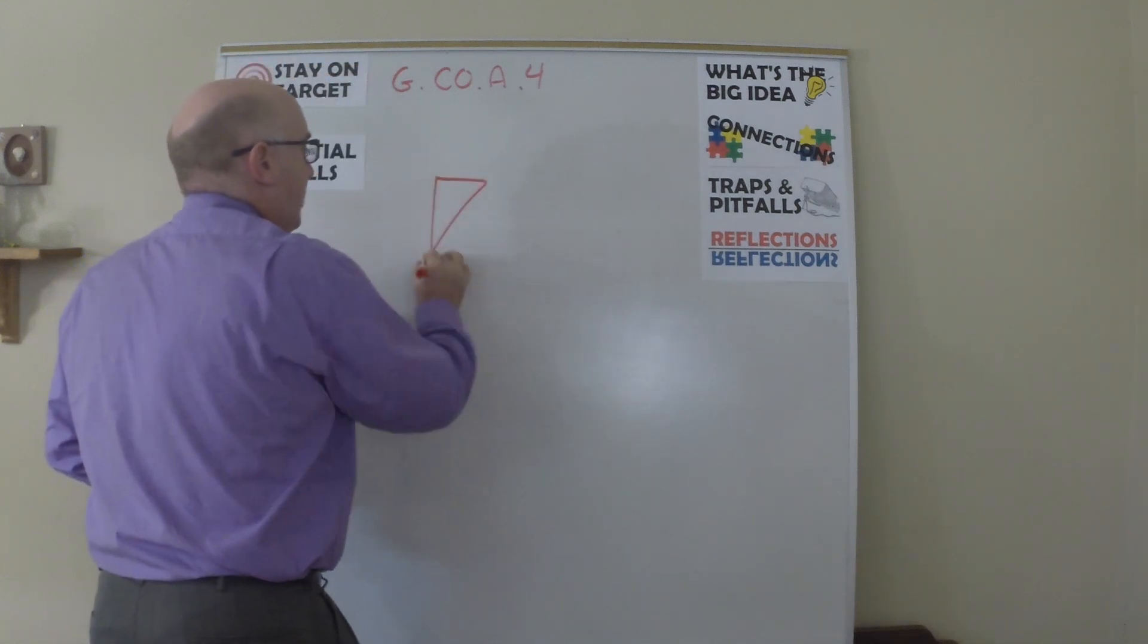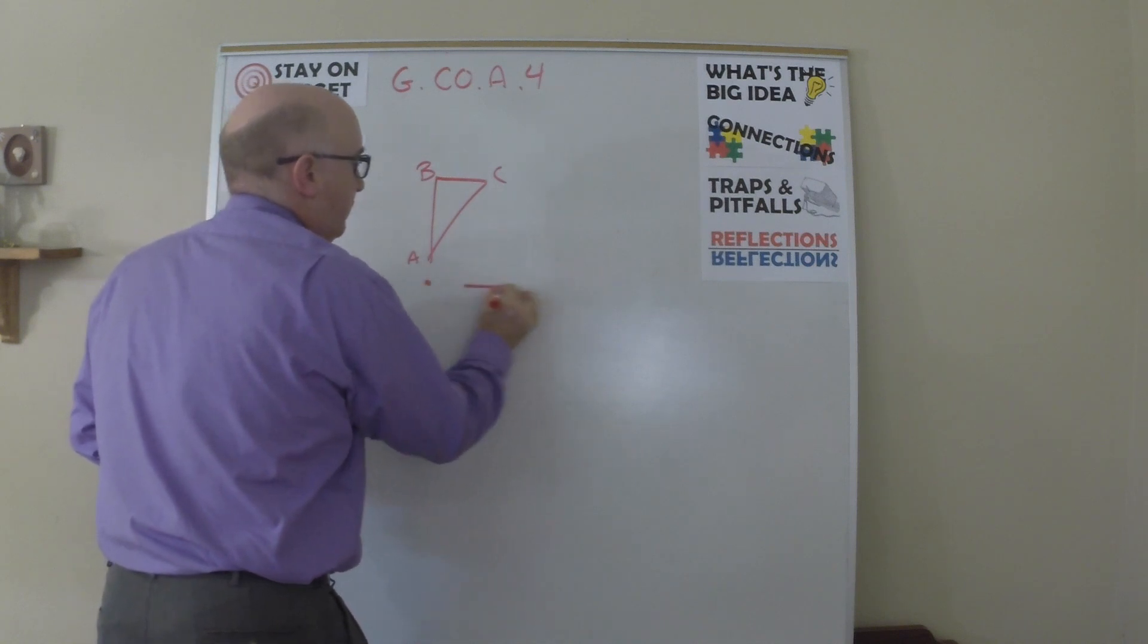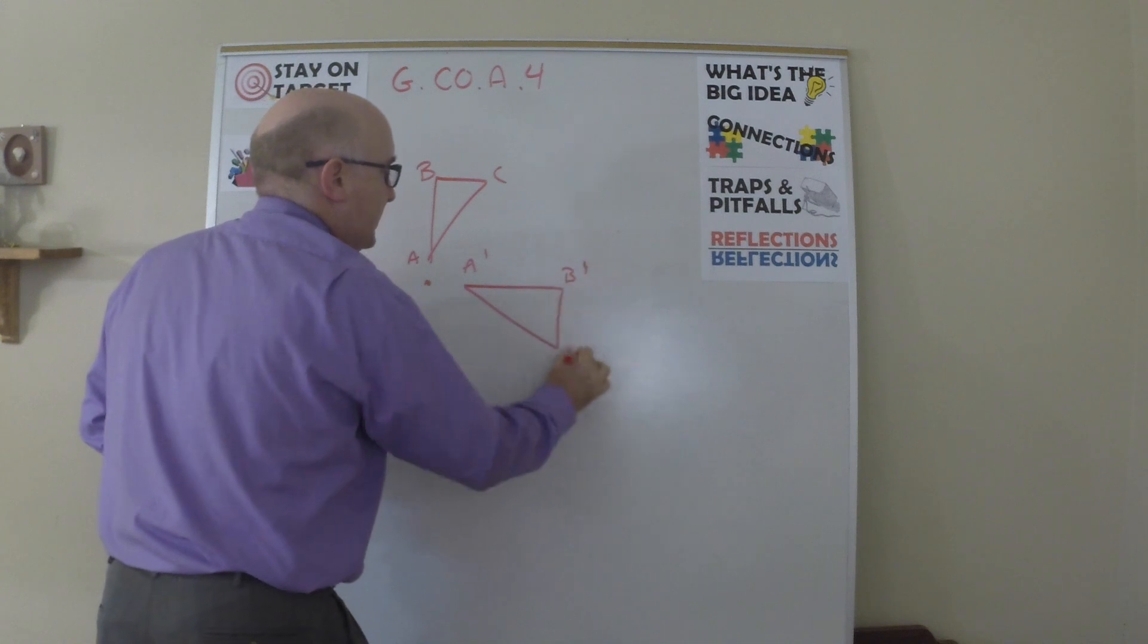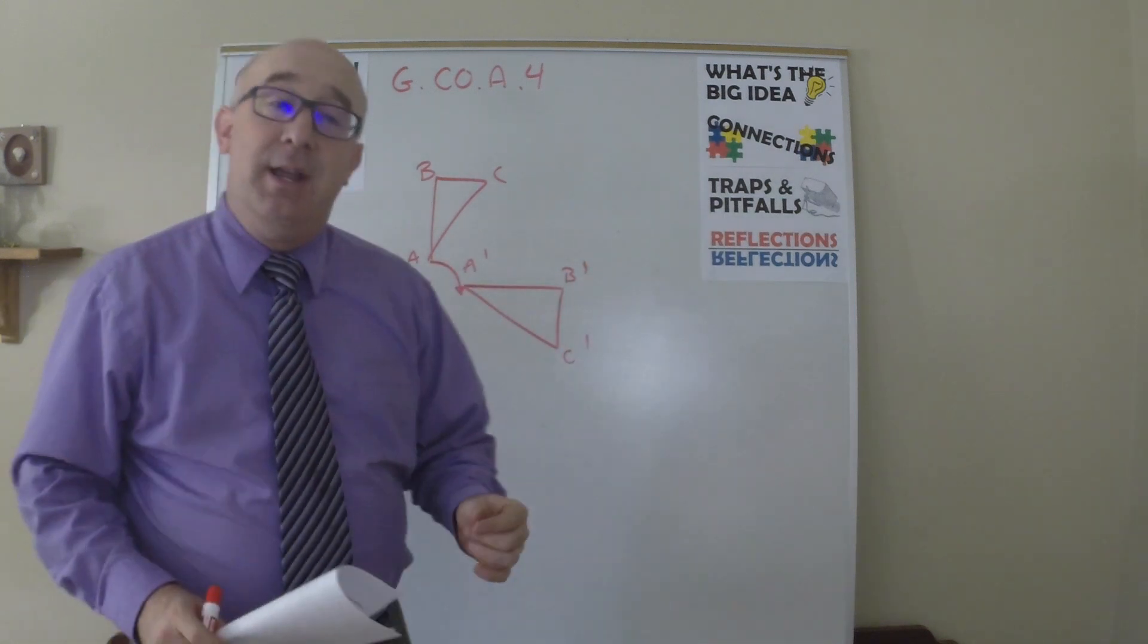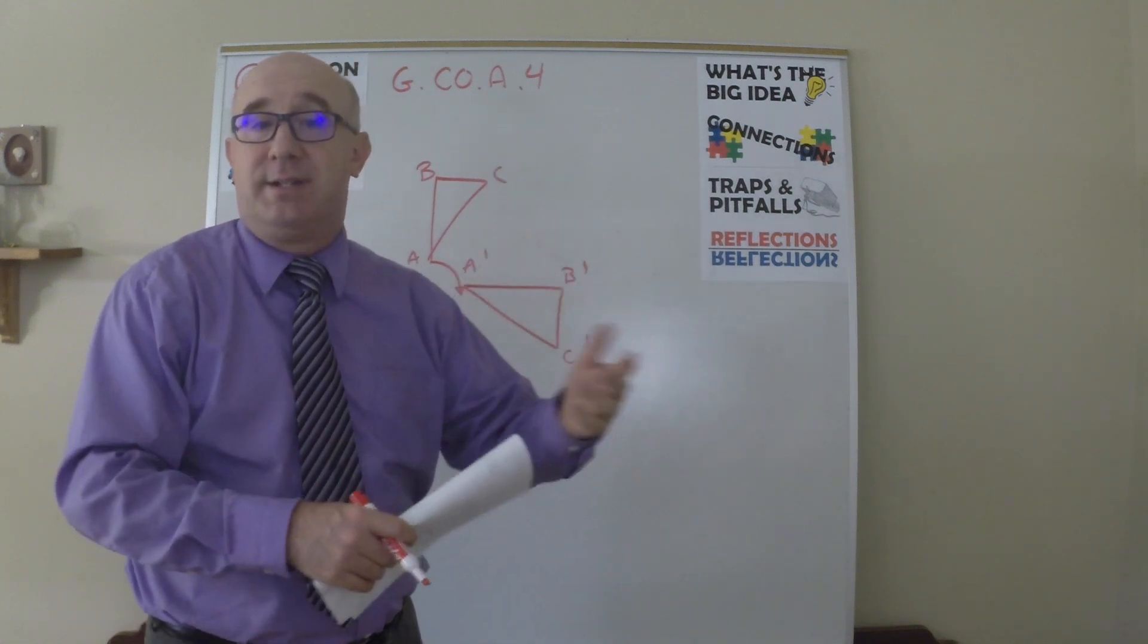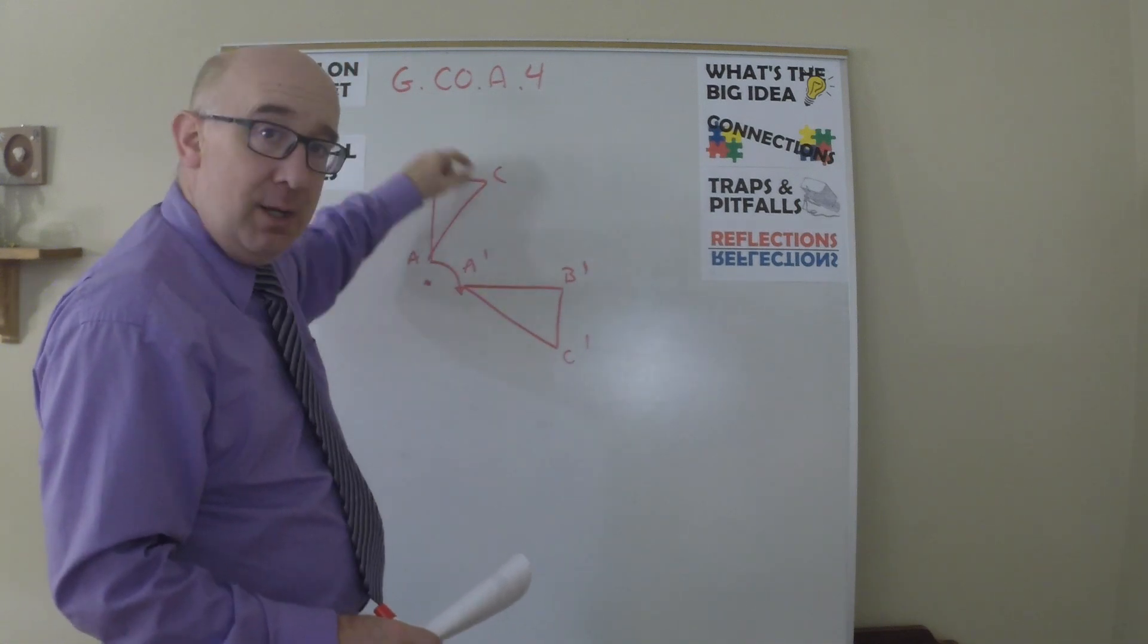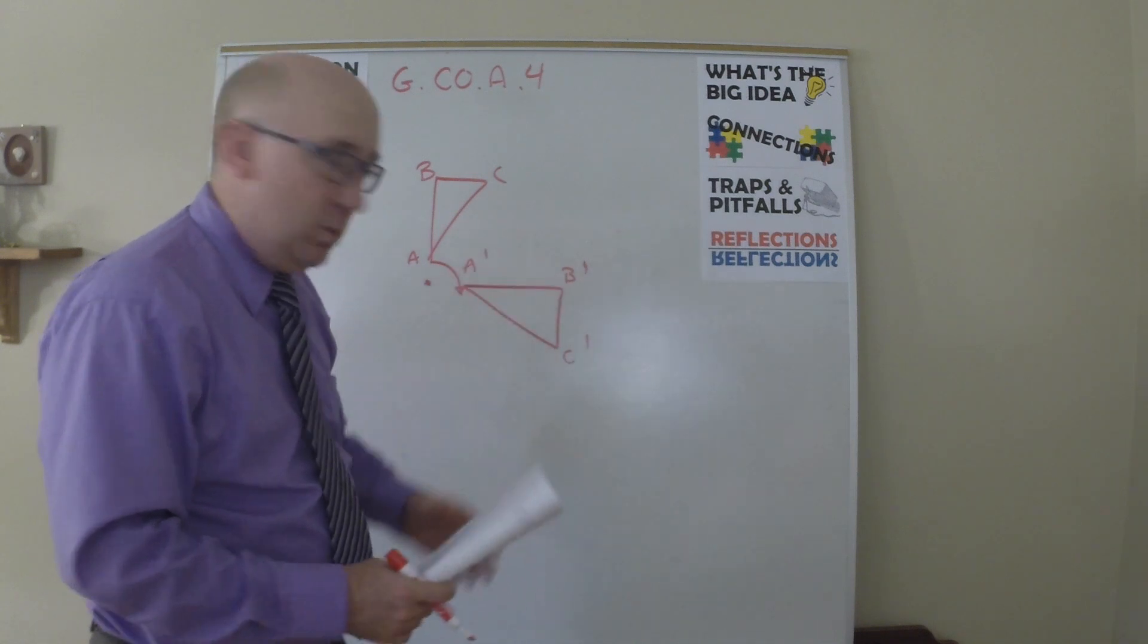If I took the triangle ABC and I rotated it, and I got a new triangle A prime, B prime, C prime, you can see the rotation that's taking place there. They have the same orientation, even though one is upright and one is sideways. Why are they oriented the same? Notice the points: ABC clockwise, A prime, B prime, C prime clockwise.